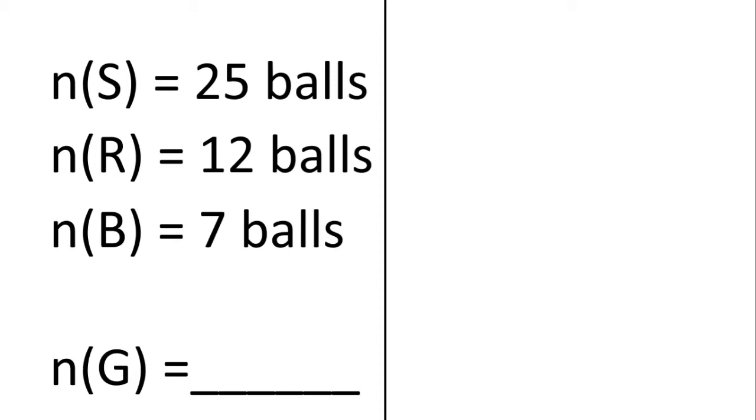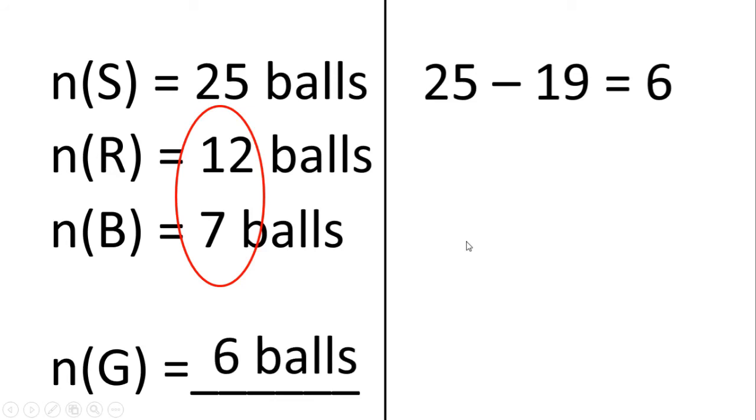...kung ilan ang green balls, iari natin i-add ang 12 and 7 and do the subtraction which is 25 minus 19. Nakuha natin yung 19 from 12 and 7 - 12 plus 7 is 19. Para makuha natin ang green balls, kailangan natin dumaan sa subtraction from 25: 25 minus 19 equals 6. Therefore, meron tayong 6 green balls.